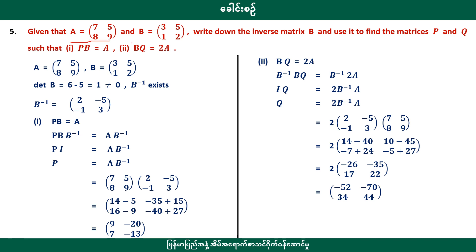Let's write down the inverse of matrix B. The procedure is to find matrix B. This is matrix B. Let's look at matrix B — the matrix B is to find the matrix B. This is the first place we want to use, equal to a.